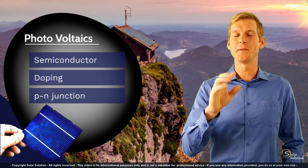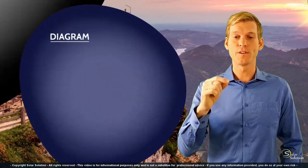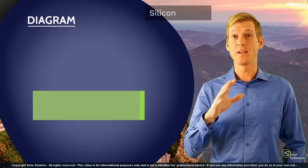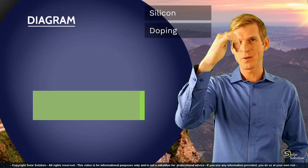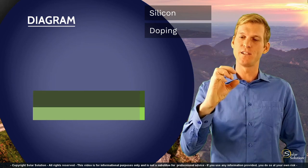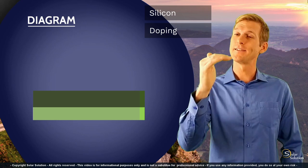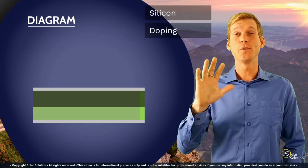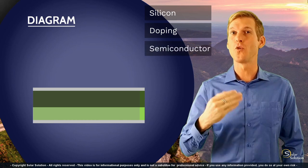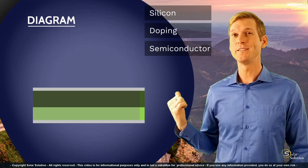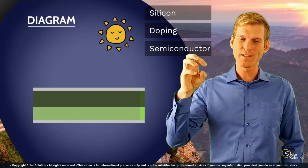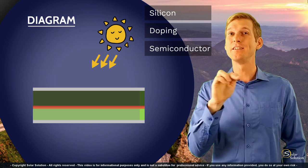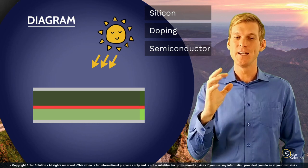It's much easier to explain this with a simple diagram. We start with a specific type of semiconductor material — silicon. We take a piece of silicon, place it in a diagram, and apply the doping — the chemical treatment — so that the top and bottom of the cell now have different technical and chemical properties. We then apply conductive material to both the top and bottom so we can wire it into a system, creating a semiconductor ready to be incorporated.